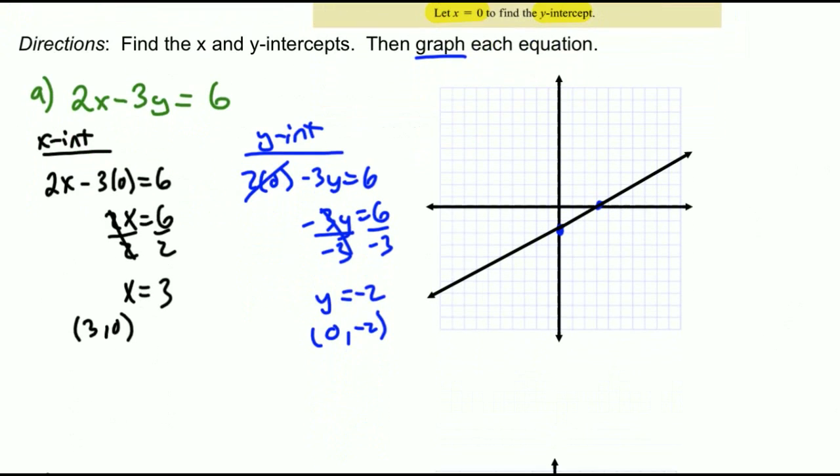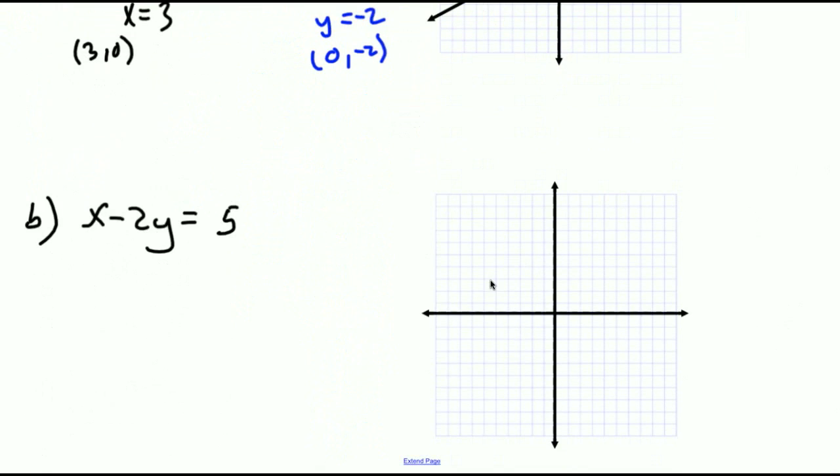Alright, and we're going to do this guy as well. Let's find the x and the y-intercept. So we'll find the x-intercept first here. So I'm going to let y equal 0. So x minus 2 times 0 equals 5. That's gone, so x is just simply 5, which is the coordinate point 5, 0. Okay, I'm going to plot that right now. So there's 5, 0. Good.